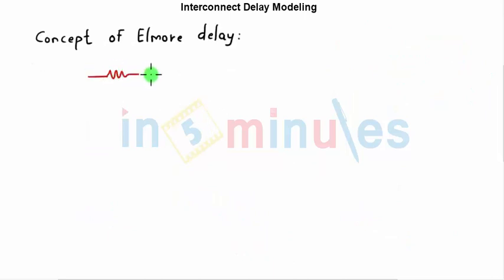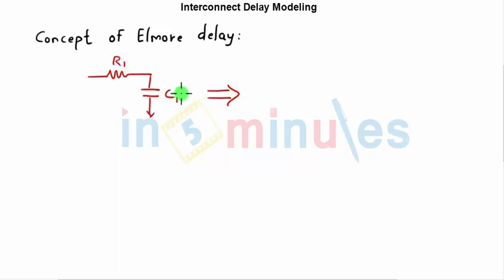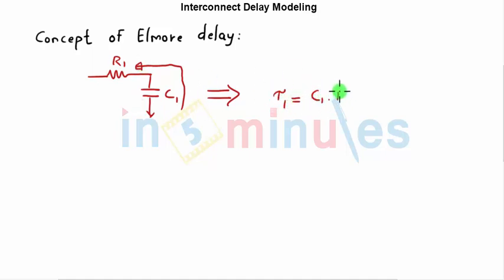Now let's understand what Elmore delay is. Suppose we have R1 and C1. Elmore delay says: start from a capacitance and see what resistance it sees — that is the value of your delay contribution. So tau_1 = C1 × R1.